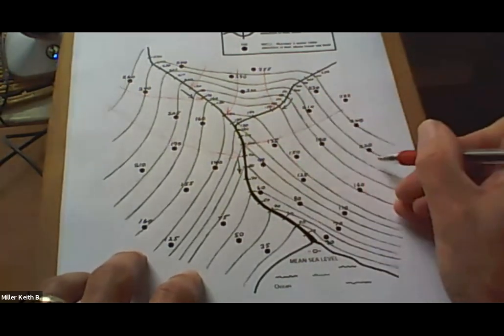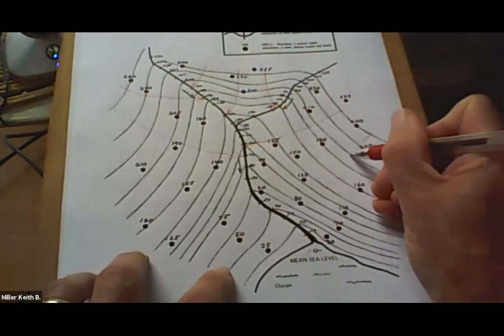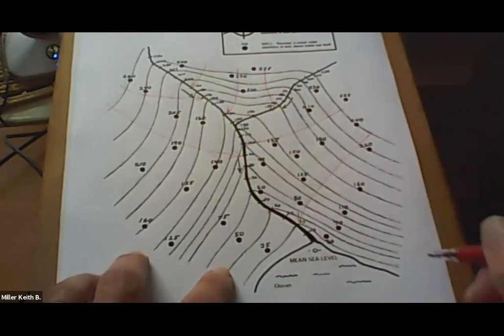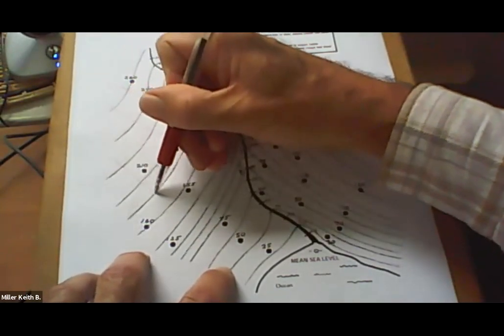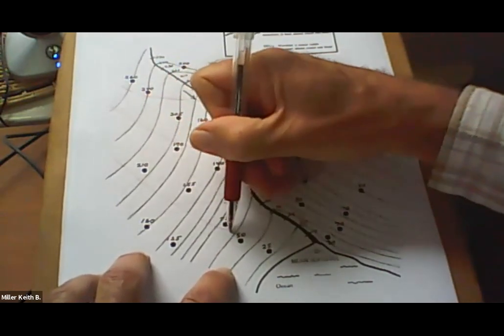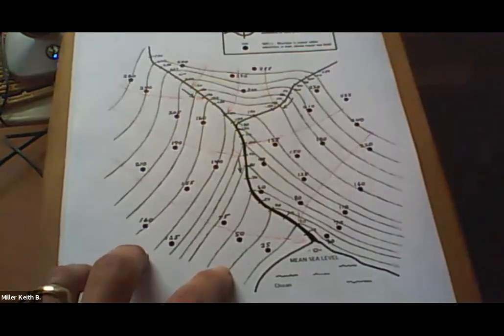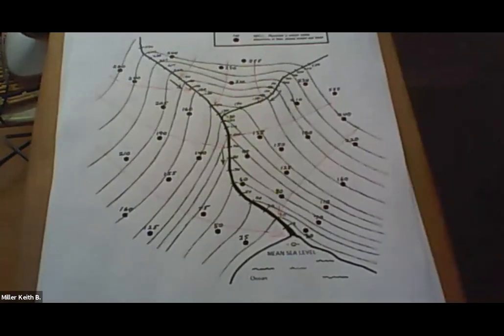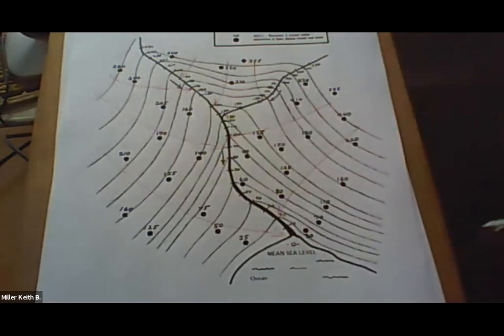And notice that the groundwater is flowing toward the stream. So groundwater always flows towards the stream or water body and will discharge into that stream or water body. So again, these arrows represent the movement of groundwater down the slope toward, in this case, toward the stream.